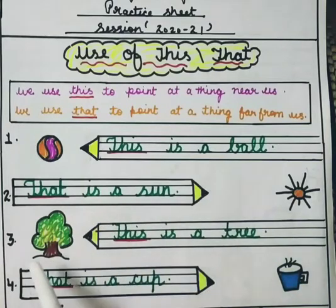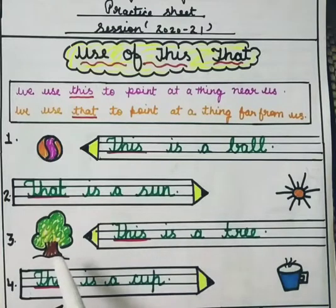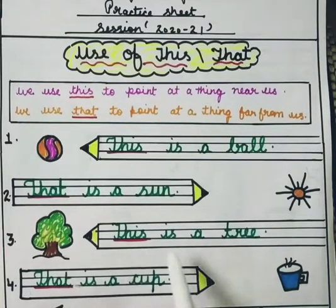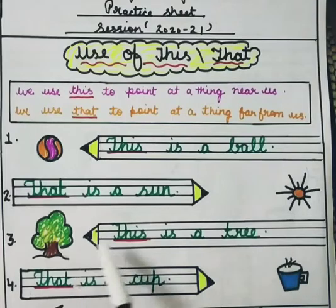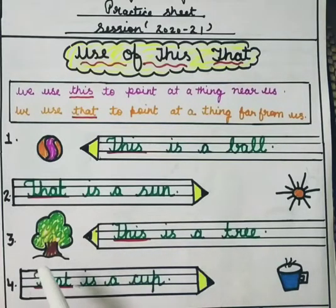Third example: see the tree. This is a tree. You can see it. This is a tree. We have used this because the tree is near. For near things, we use this.